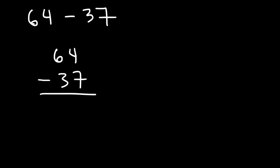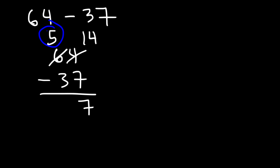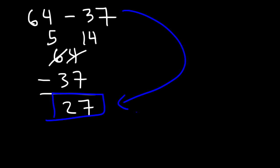So we're going to borrow a 1 from the 6. The 6 becomes a 5, and the 4 changes to a 14. So now let's subtract 14 by 7: 14 minus 7 is 7. And then we can subtract 5 minus 3, which is 2. So the final answer is 27. That's 64 minus 37.